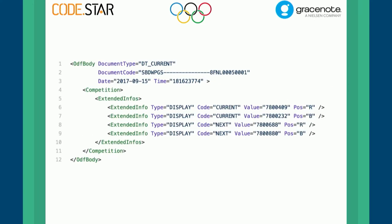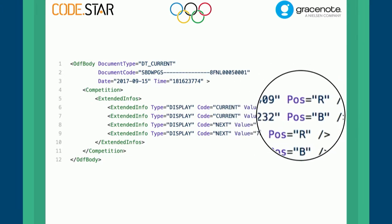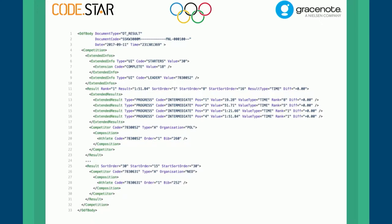What does that look like? We have a DTCurrent file here — sorry, it's XML. At the very top you see the document type: DTCurrent. There's a document code which identifies what kind of event this is relevant data for. In this case it says SBD for snowboard, W for women's, then parallel giant slalom, then the eighth final, the fifth heat, and the first run. You also see at the current time there are two athletes going down the slopes with the red and blue bib, and we also see which athletes will be coming up next.